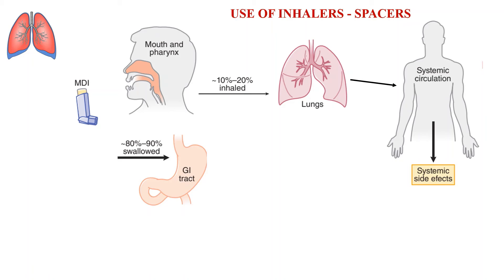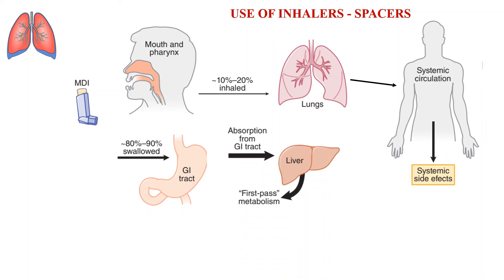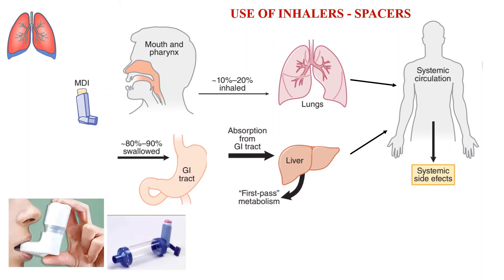The majority of the drug reaches the GI tract via the mouth, then reaches the liver via portal circulation. There it may undergo first-pass metabolism, or otherwise it may lead to systemic adverse effects. This is the main problem associated with oral absorption of inhaled drugs.